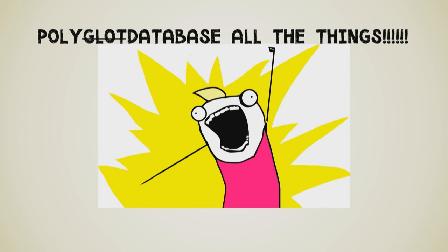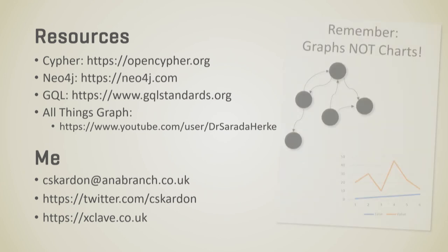Use graph databases with other databases. We spend all our time writing software projects without thinking about which database to use. But language-wise, I use Python for natural language processing and C# as my backend — I don't use C# for NLP because it's not great at that. We should think the same way about databases. Use a document database for storing documents. Use a graph database to pull out the relationships. There's no reason we can't use multiple databases in one system.